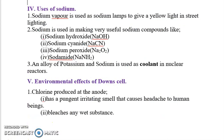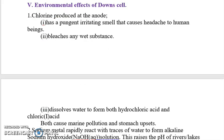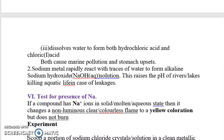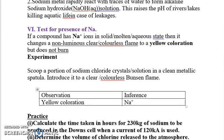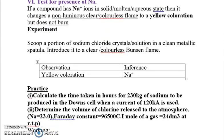Some uses of sodium metal: sodium vapor is used in sodium lamps to give a yellow light in street lighting, commonly seen on our roads. Sodium is also used in making useful sodium compounds. Regarding the environmental effects of the Downs cell: chlorine produced at the anode has a pungent, irritating smell that causes headaches and bleaches wet substances. It dissolves in water to form both hydrochloric acid and hypochlorous acid, causing marine pollution and stomach upsets.